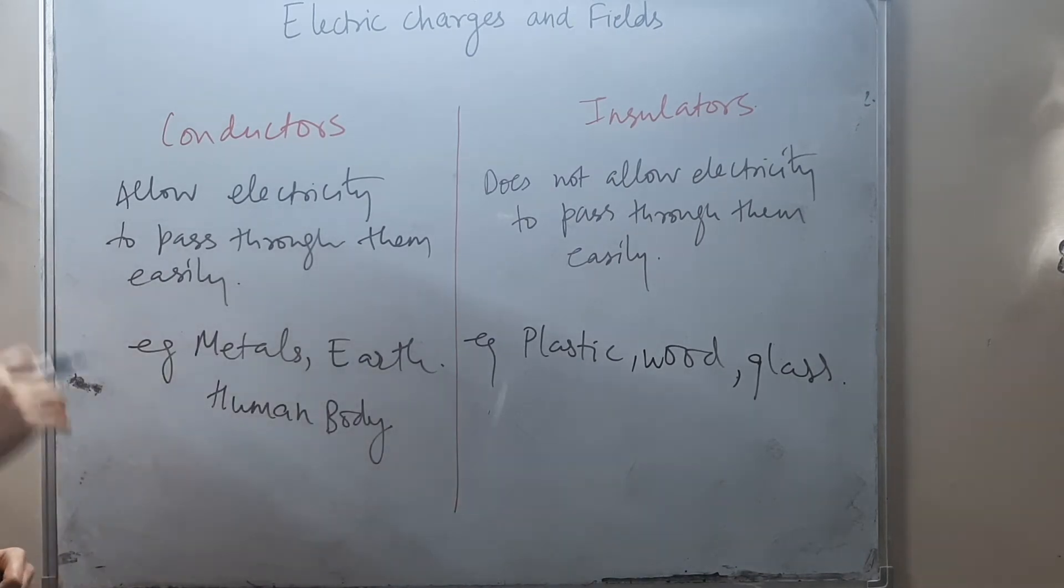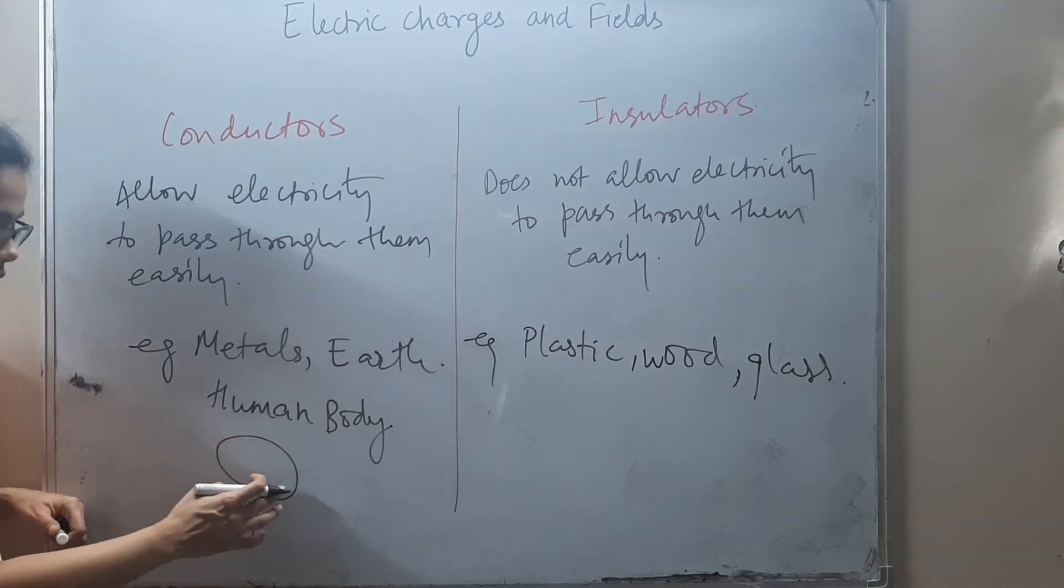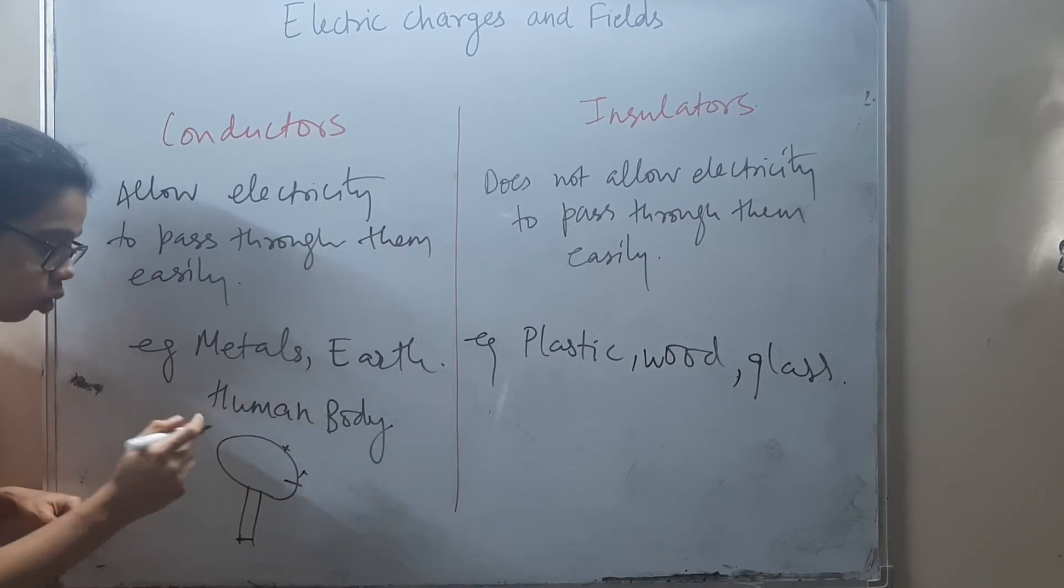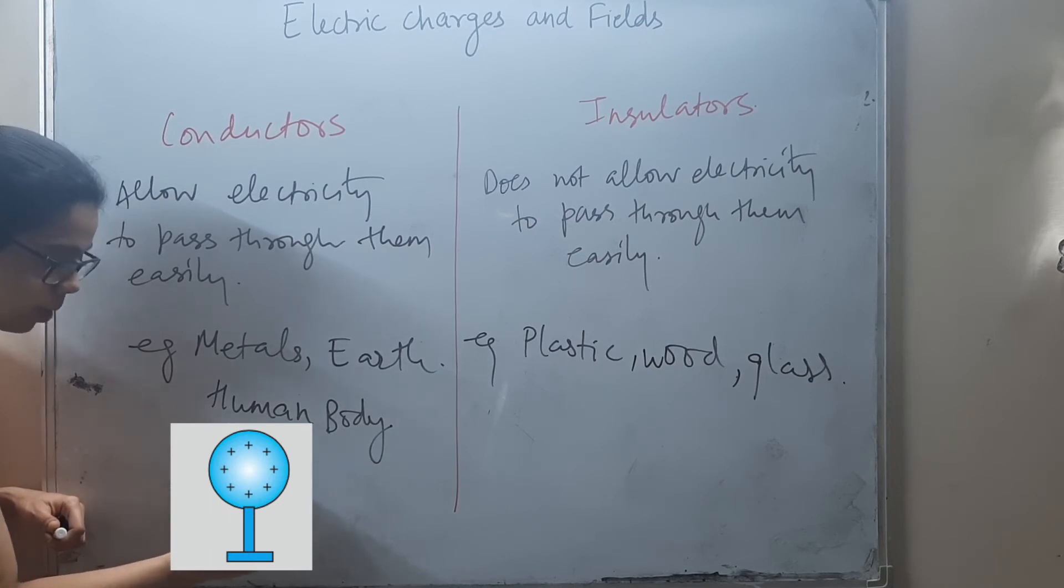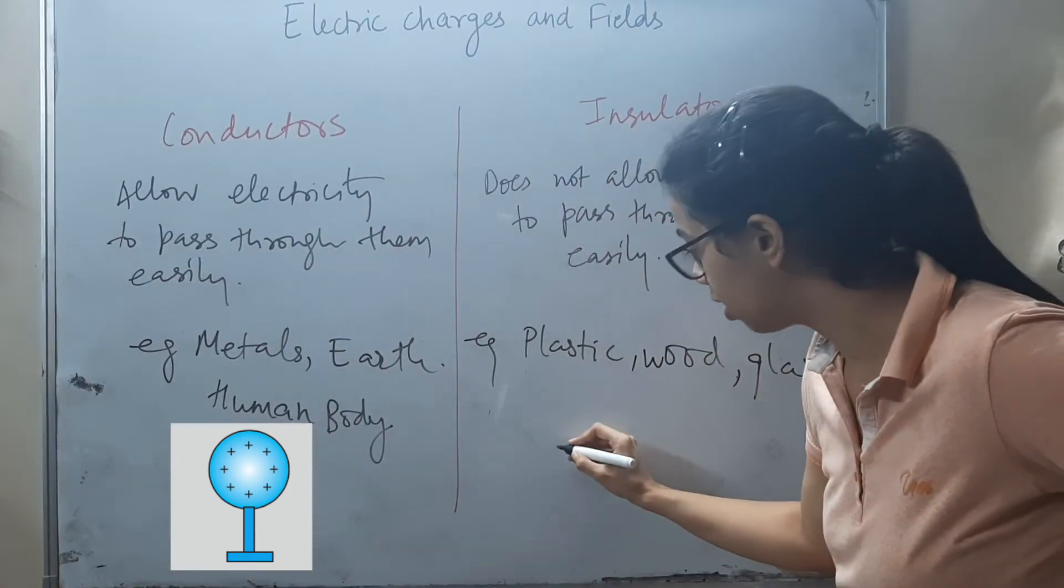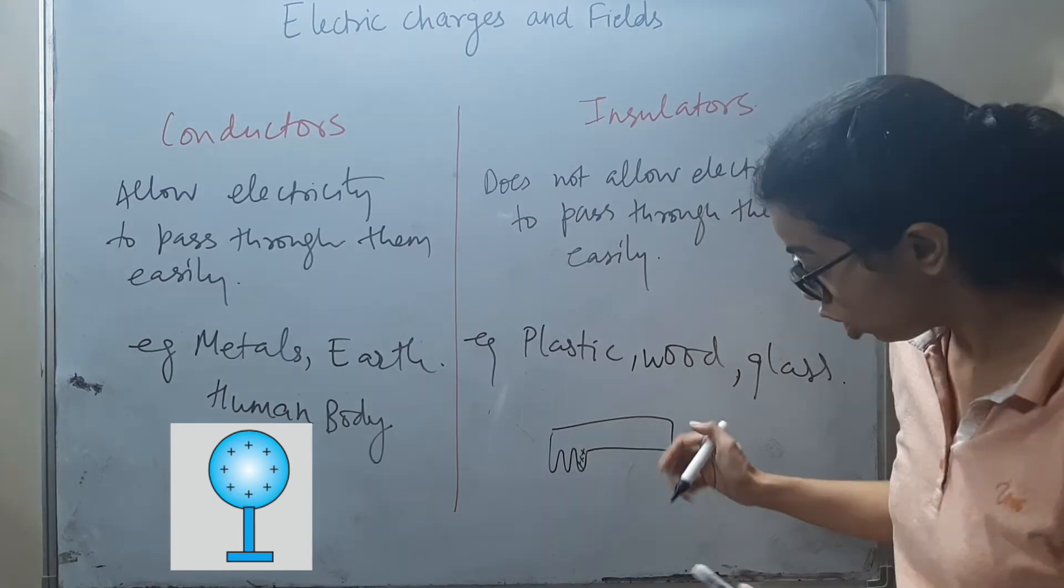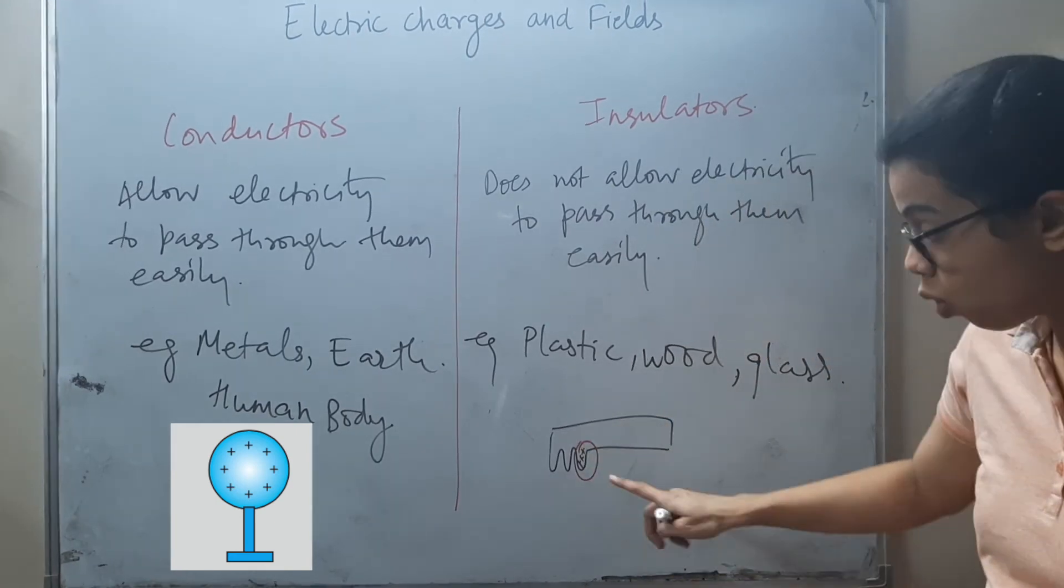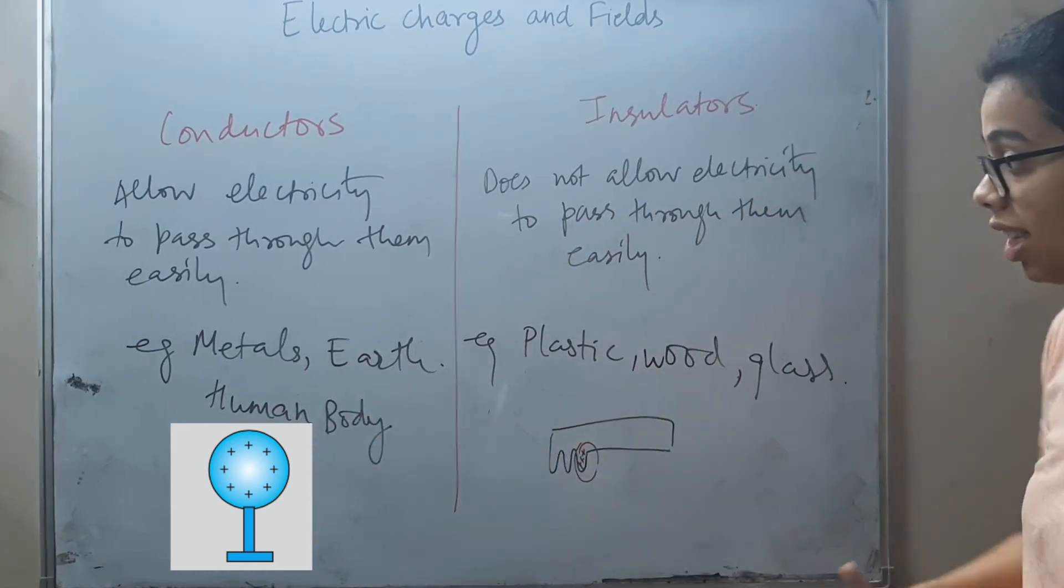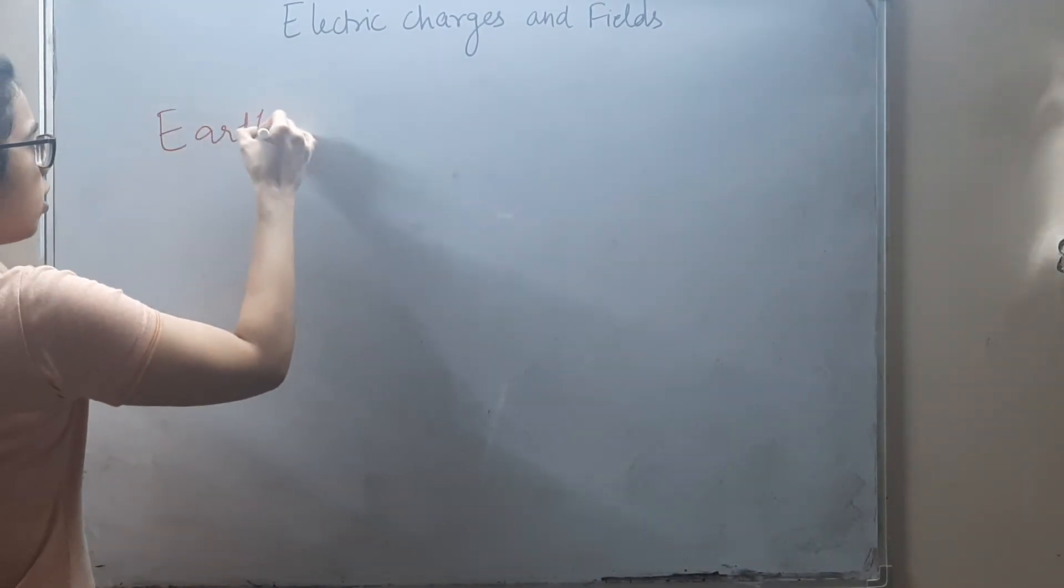Now there is one more major difference. If we have a conductor and we give it charge, then whenever we give charge to a conductor, that charge will distribute over the entire surface of the conductor. Conversely, if we give charge to an insulator, like a plastic comb, the charge remains localized where it is applied.